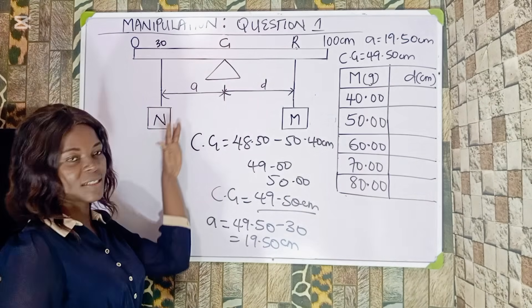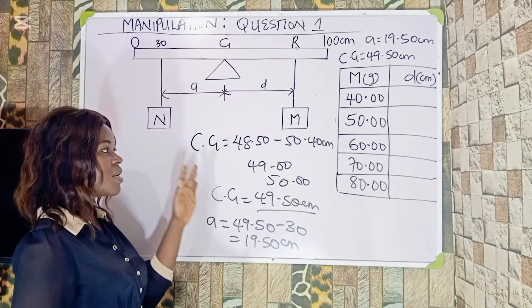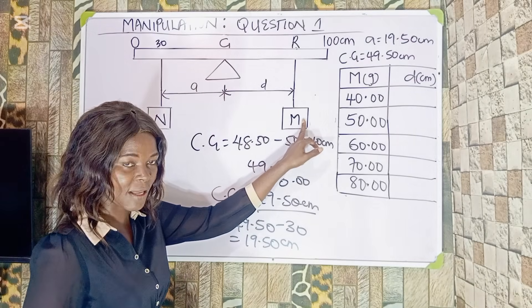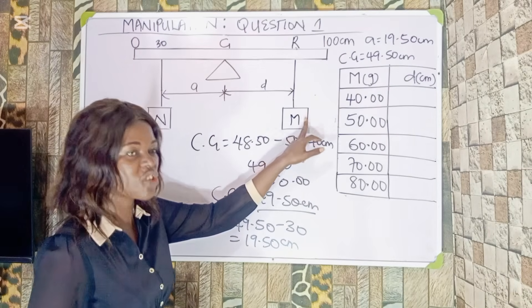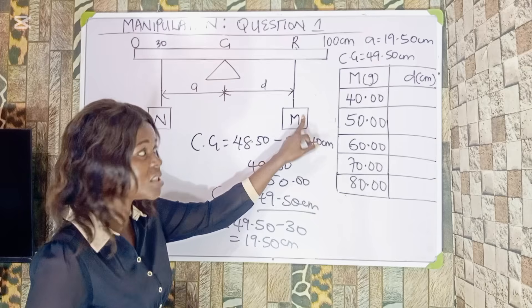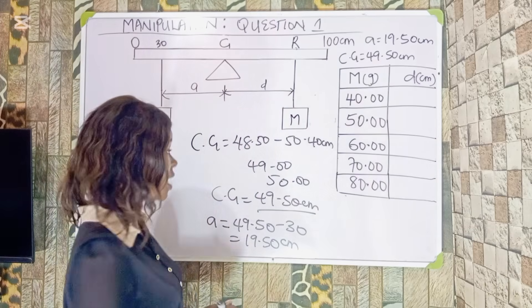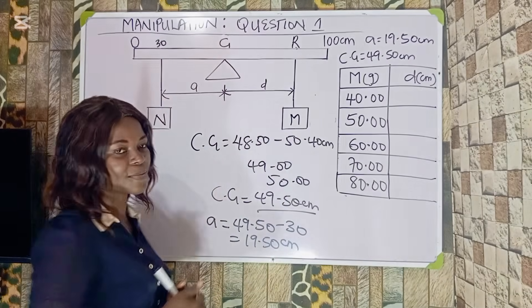So I can know the distance. My A equals 49.50 minus 30, which gives me 19.50 centimeters. Having known my A, which the question says must be constant, the position of CG and this must be kept constant throughout the experiment. That means we are not going to touch this side. We are going to vary the mass here. As the masses are changing, this distance is going to change. So what you are varying in this experiment is the mass and the distance.